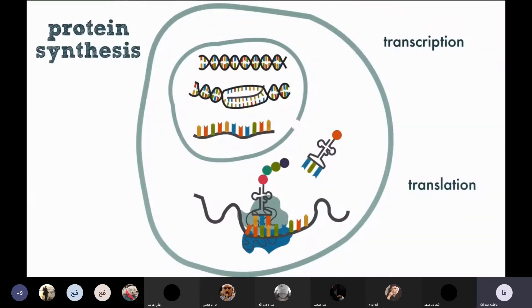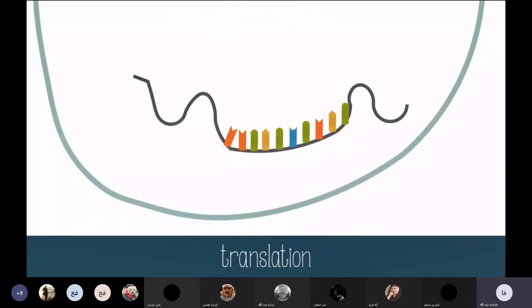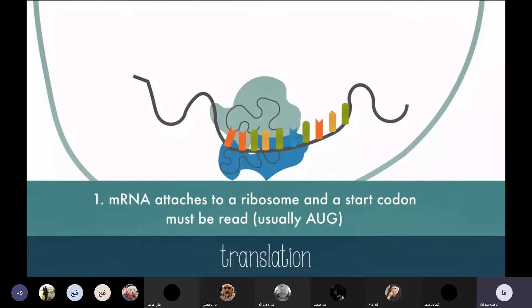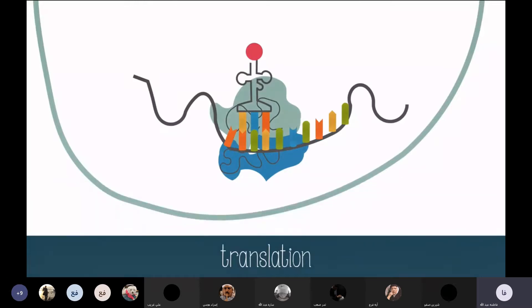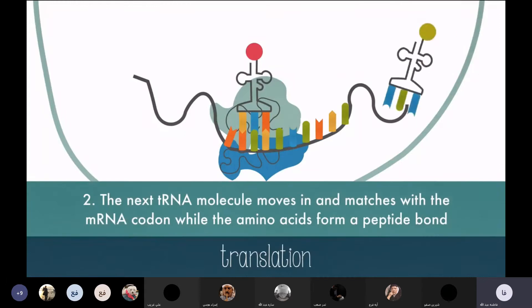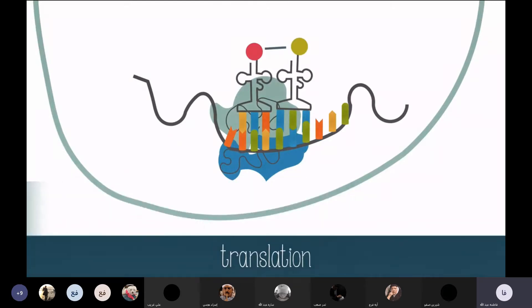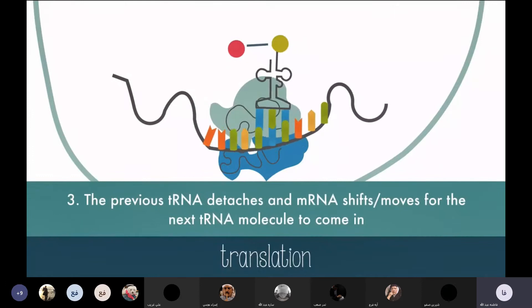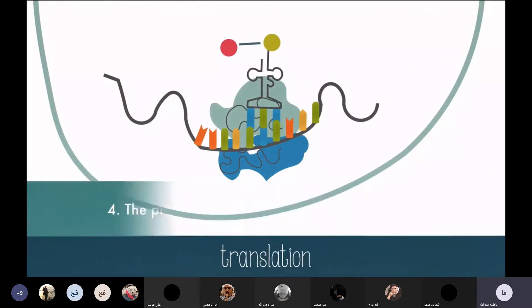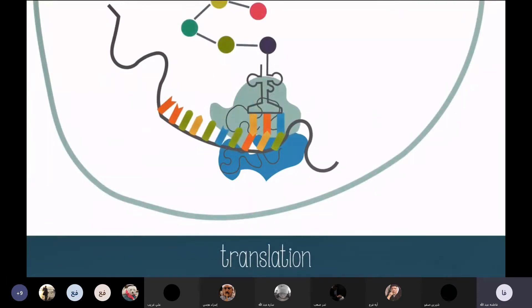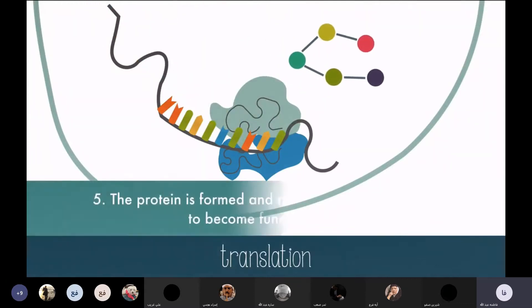Translation occurs in the cytoplasm wherever there is a ribosome. To get translation started, mRNA attaches to a ribosome and a start codon must be read — it is usually AUG. The first amino acid is brought in by tRNA whose anticodon matches the codon on mRNA. Then the next tRNA molecule moves in, matches the next codon, and the amino acids form a peptide bond and link together. The first tRNA detaches and the mRNA shifts through like ticker tape. The protein grows until a stop codon is reached, at which point the protein is formed and ready to fold to become functional.